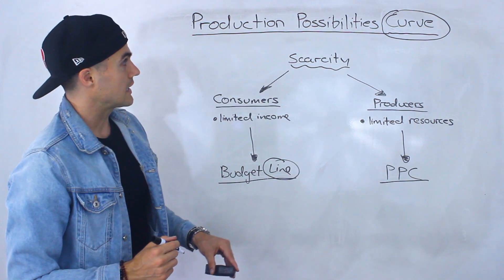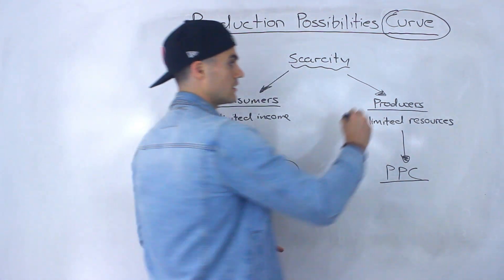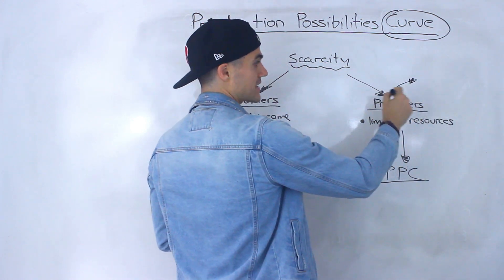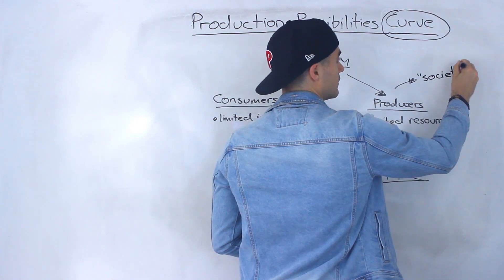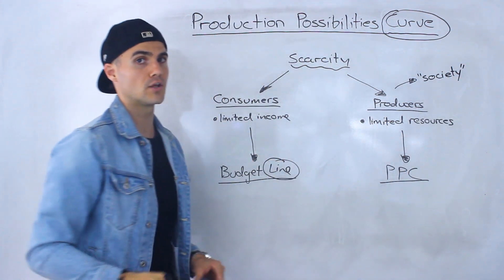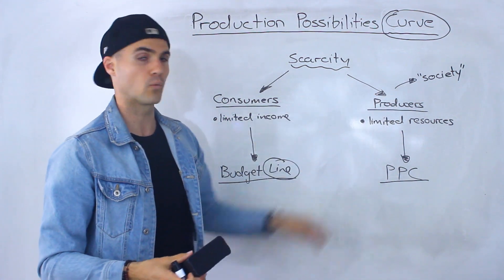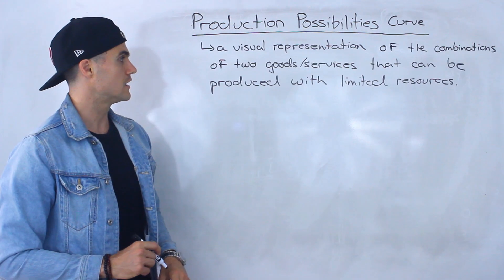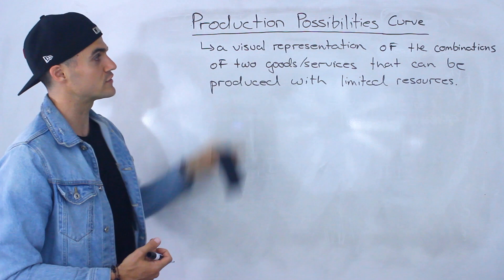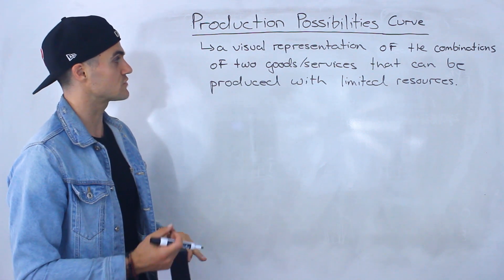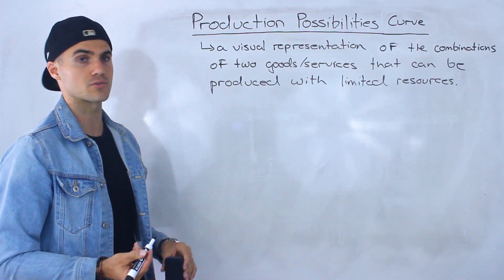One thing to mention: sometimes when talking about a production possibilities curve, instead of referring to this group as producers, a lot of times you'll see this group referred to as society. Throughout the video I'll mention how society in general fits with this concept. A more specific definition: the production possibilities curve is basically a visual representation of the combinations of two goods or services that can be produced with limited resources.